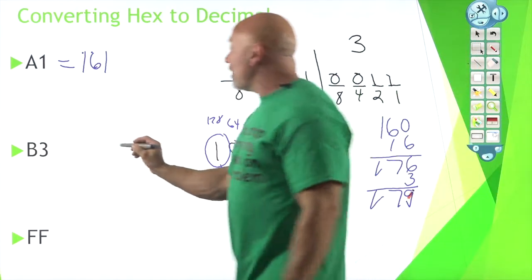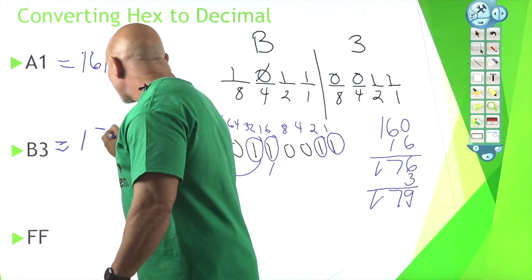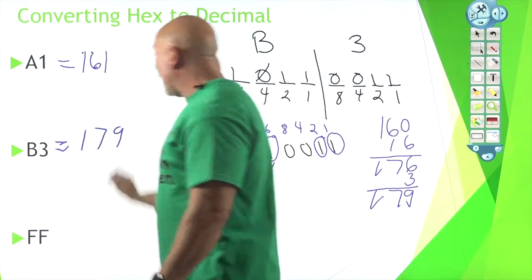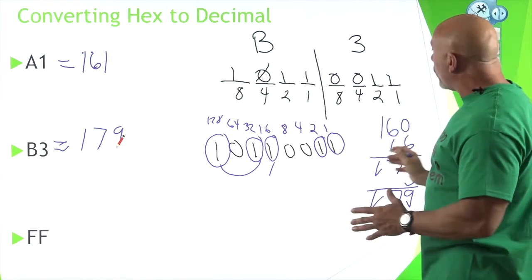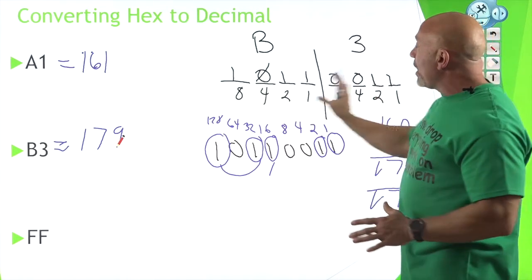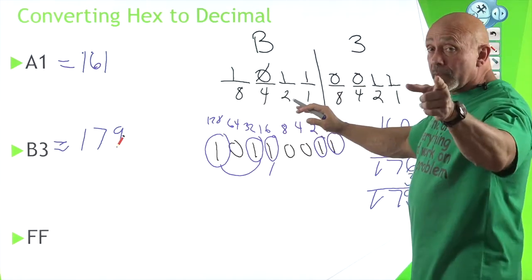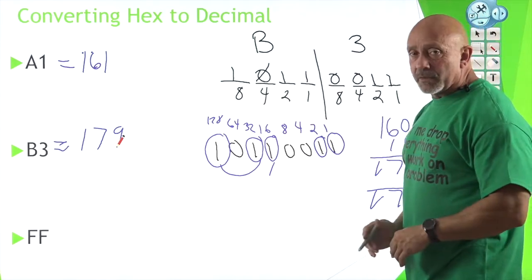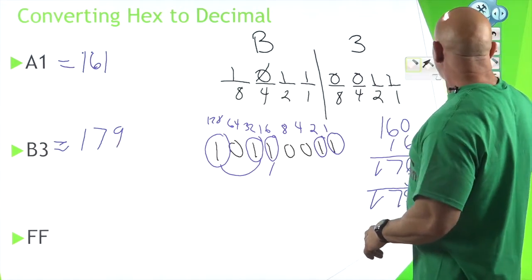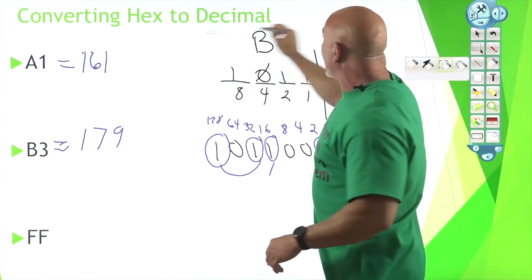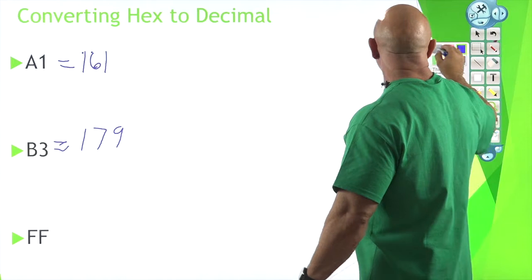So B3 is an equivalent to 179 in decimal. And again, it is the same format we use over and over again. We break it down, right? We get the binary, binary is the middle ground, and then we just add the bit values that are on. Last example, and this one's really easy. Really easy, and I'm sure you already have the answer for it already. But we're just going to do it just to do it. Let's go ahead and take black again.